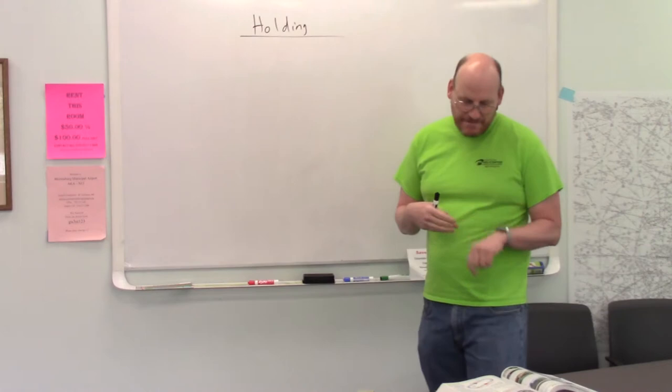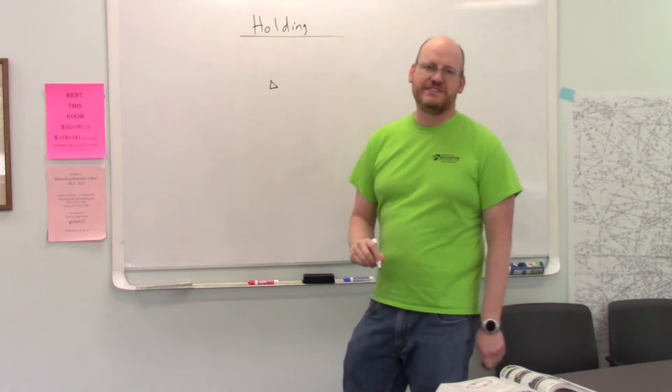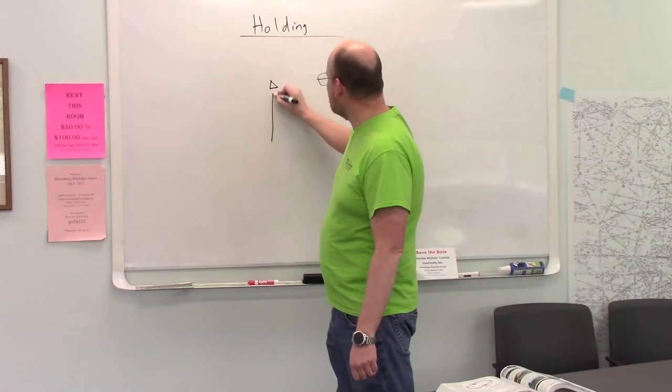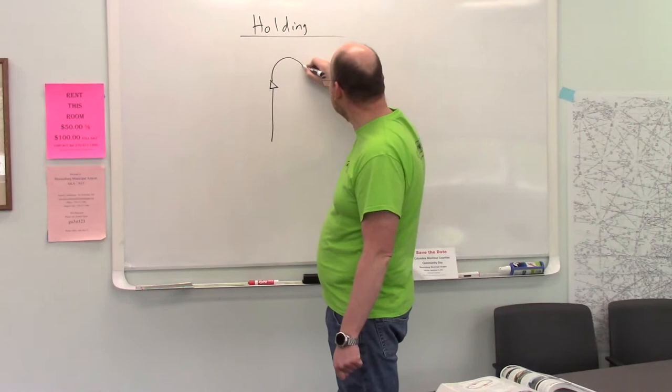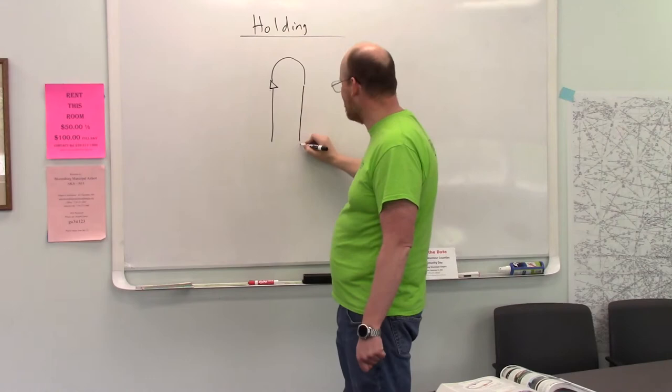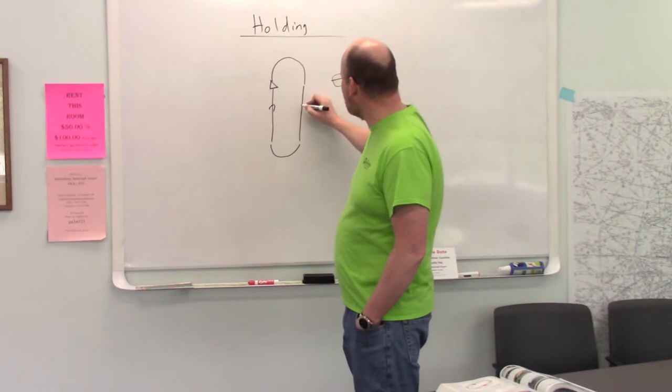So what is a hold? What does it look like? A hold is pretty much something like this. You have a fix of some sort. It could be a VOR, it could be a waypoint, you don't know for certain. You fly to it on the inbound leg, and then you do a 180 degree turn. And then you fly on the outbound leg, and then you do a 180 degree turn. And that's pretty much a hold.